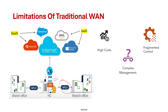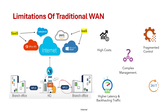There is also fragmented control — the lack of centralized management makes it challenging to enforce policies across the network, which is one of the biggest problems in traditional networks. Additionally, there is high latency and backhaul traffic — routing traffic from remote sites to data centers and then to the cloud increases overall round-trip time. Branch offices wanting to access the internet have to go to HQ first, resulting in higher latency and poor performance for cloud applications.